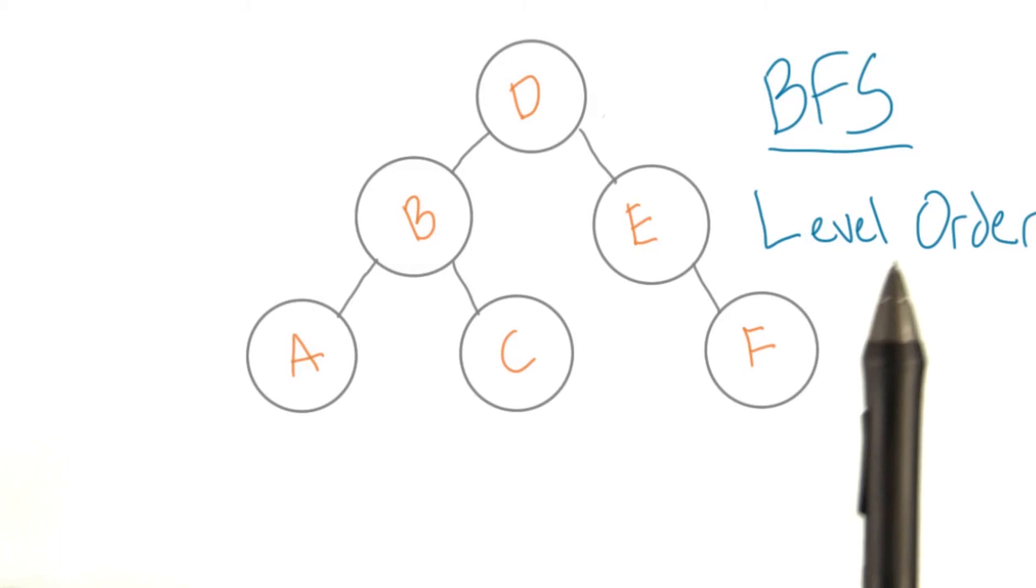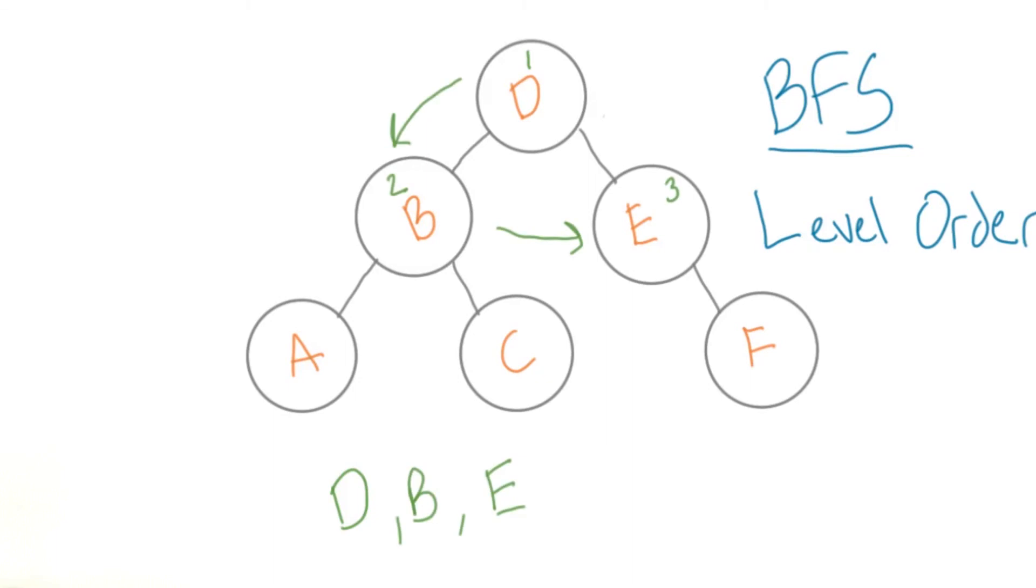For trees, a level order traversal is a BFS with a more exact algorithm to implement. A level order traversal is exactly what it sounds like. Start at the root, then visit its children on the second level, then all of their children on the third level, until you've visited every single leaf.